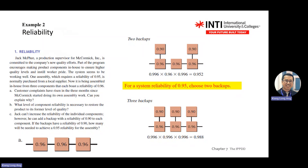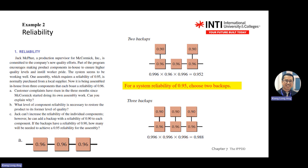Previously, we stopped at the slides where we calculate the reliability of a system. There are only two equations for reliability: either series or parallel. For series, the system reliability equals R1 multiplied by R2 until Rn. If you want a backup system, the system reliability becomes one minus (one minus R1)(one minus R2) and so on. Previously, we stopped at these two equations.